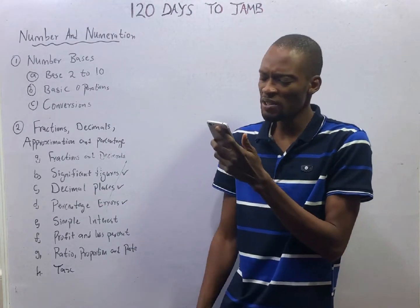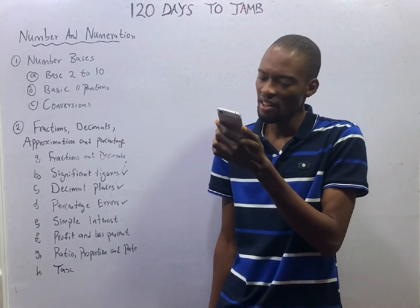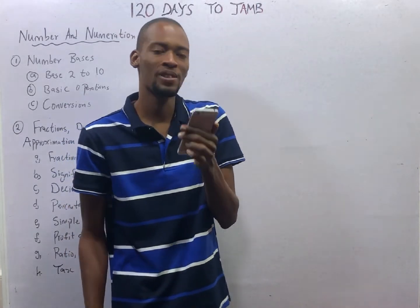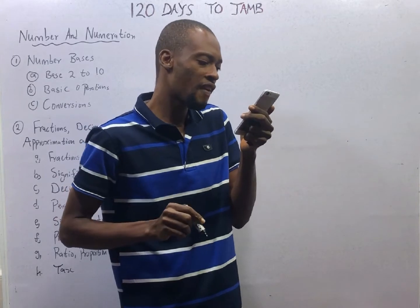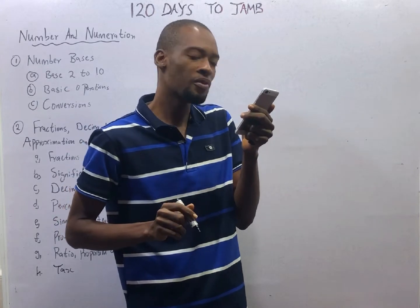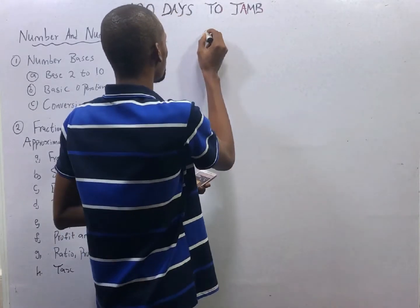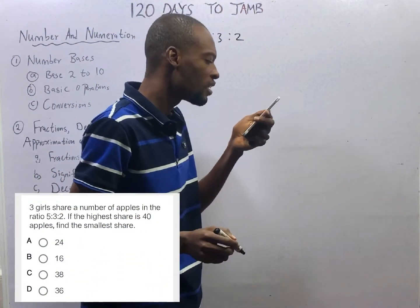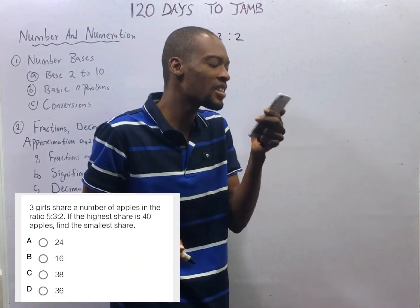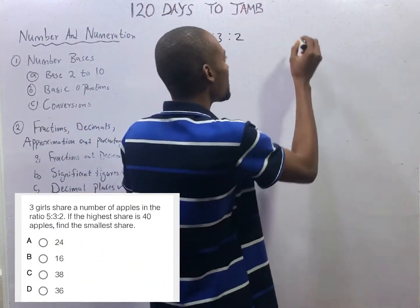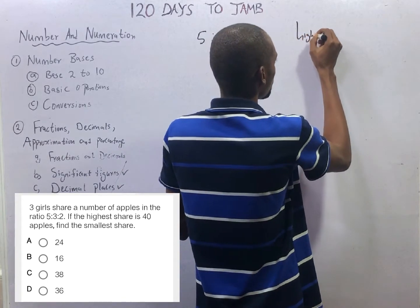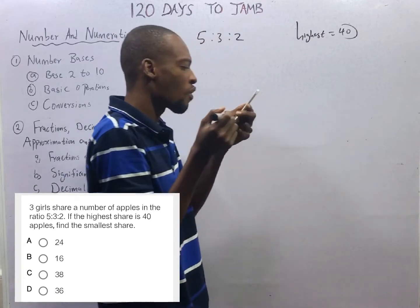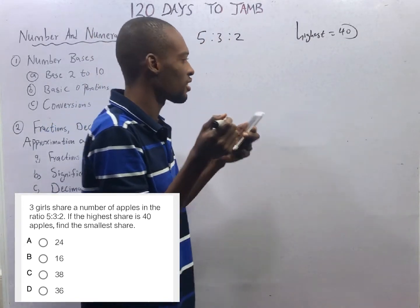The first question in this episode says: 3 guests share a number of apples in the ratio 5:3:2. If the highest share is equal to 40, find the smallest share.